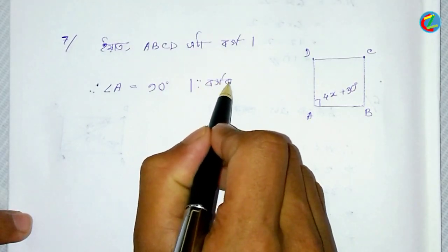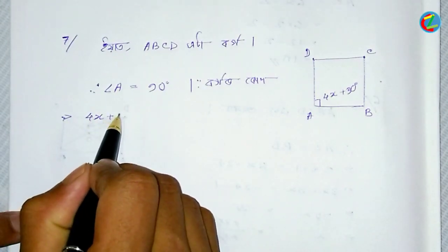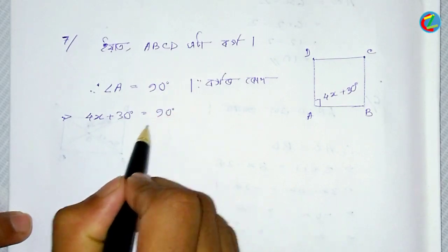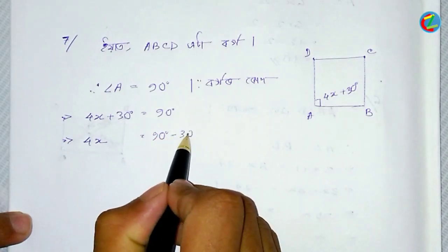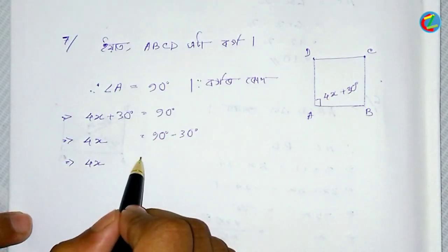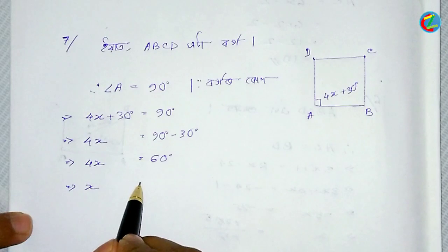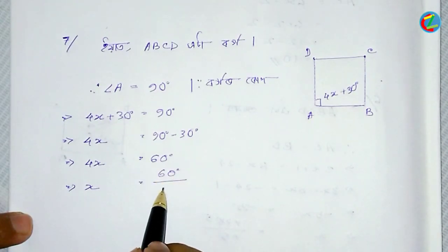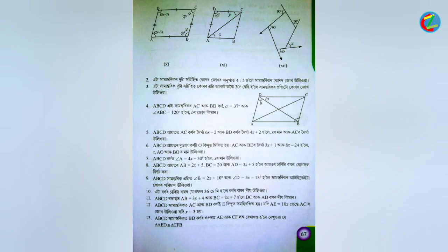This is 4x plus 30 degrees. It is equal to 90 degrees. So 4x plus 30 minus 30 equals 90 minus 30; the fur x is equal to 60. Therefore x is equal to 60 divided by 4, and ultimately x is equal to 15. So the answer is x equals 15.